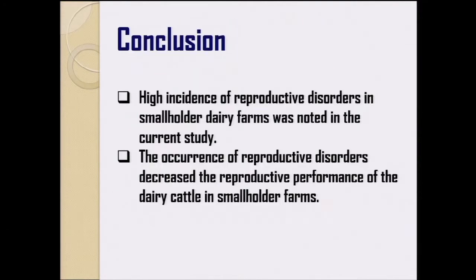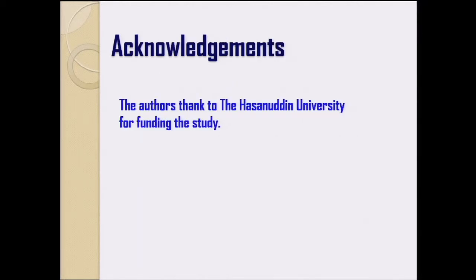In conclusion, a high incidence of reproductive disorder in smallholder farms was noted in the current study, and the occurrence of reproductive disorder decreased the reproductive performance of cattle in smallholder farms. This is all of my presentation. Thank you very much.